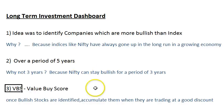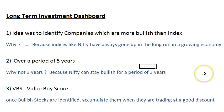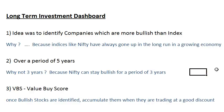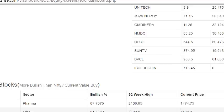VBS — Value By Score — is a factor where, once you identify good companies, you want to identify a really good time to accumulate these stocks. For example, the best bullish stocks can be accumulated when they are offering a discount or trading near or below their 200-day EMA. The Value By Score helps identify, at any point in time, which bullish stocks are trading at a good discount. Currently Lupin is offering a good discount due to some issues in the pharma sector, trading at close to 30% below its 52-week high.